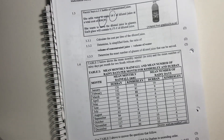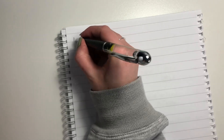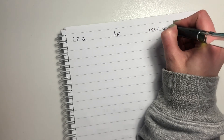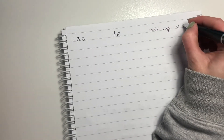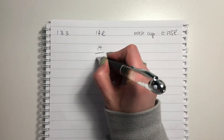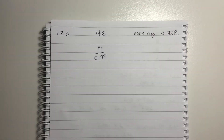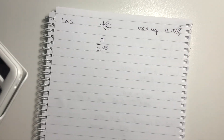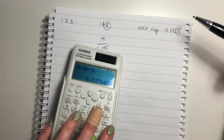Let's go to 1.3.3. It says determine the exact number of glasses of diluted juice that can be served. So what we know is we had 14 liters of diluted juice and each cup is 0.175 liters. So how do we know how many cups? We say 14 divided by 0.175. Remember, you can do this because they are in the same unit. If they weren't in the same unit — say that was in milliliters — you would have to convert. So be careful there.